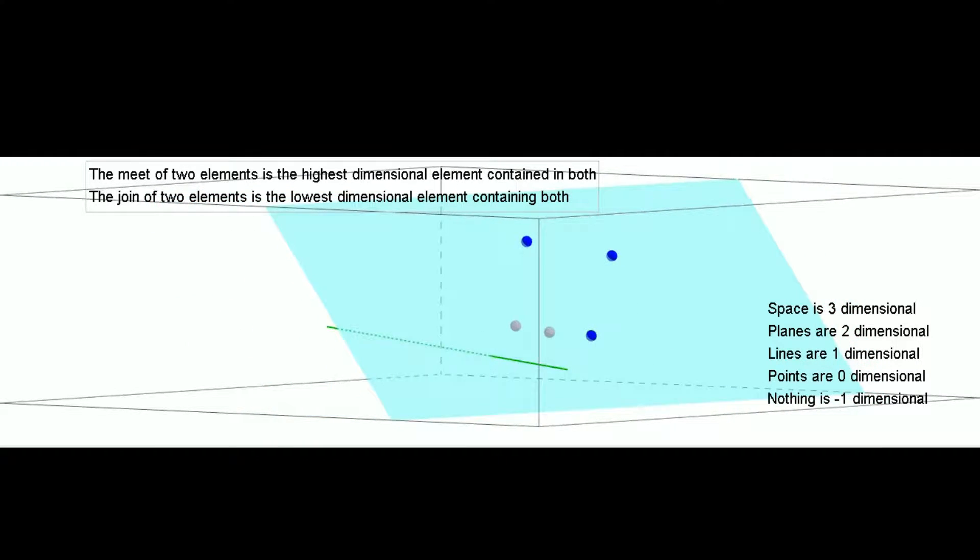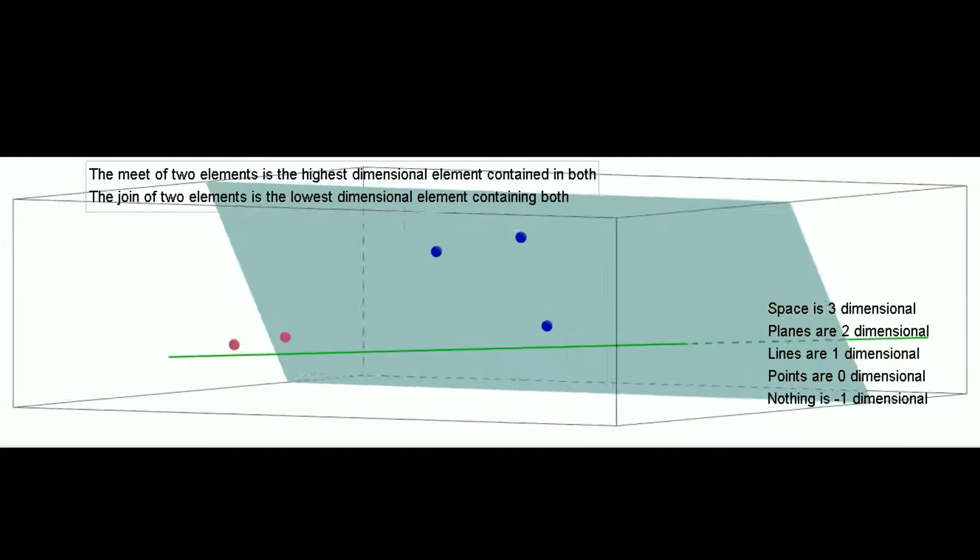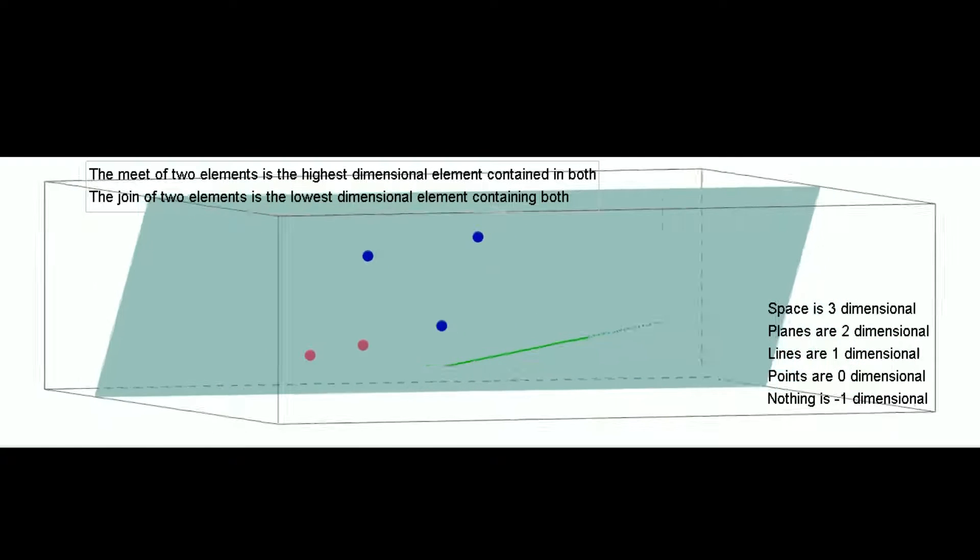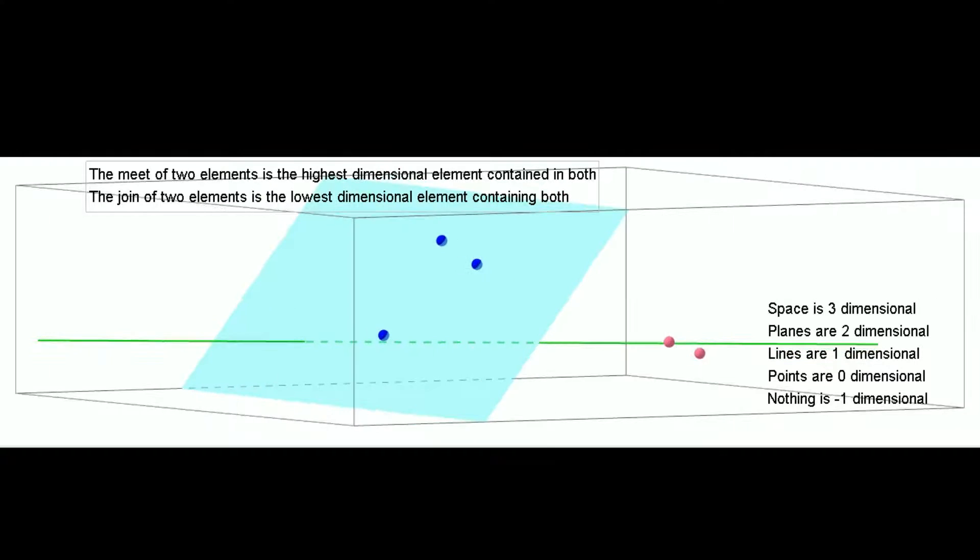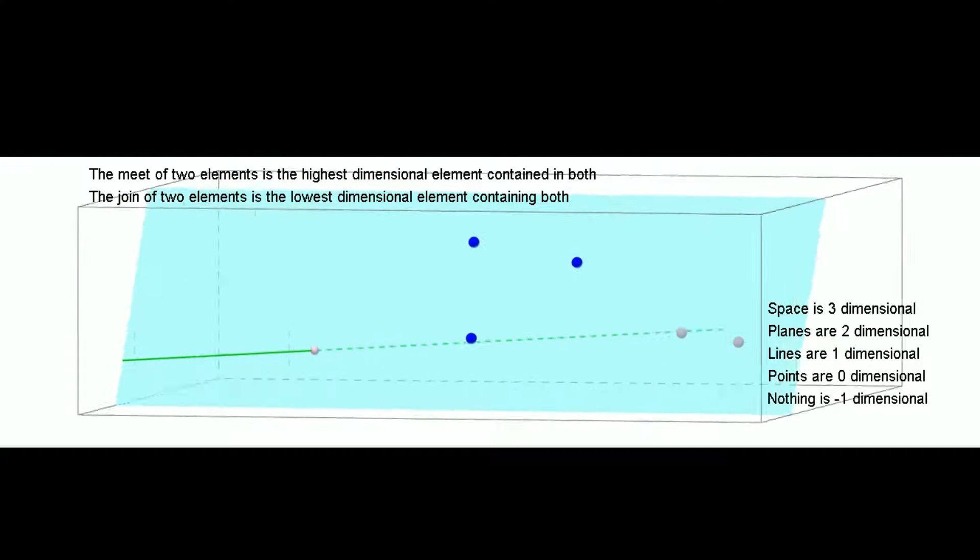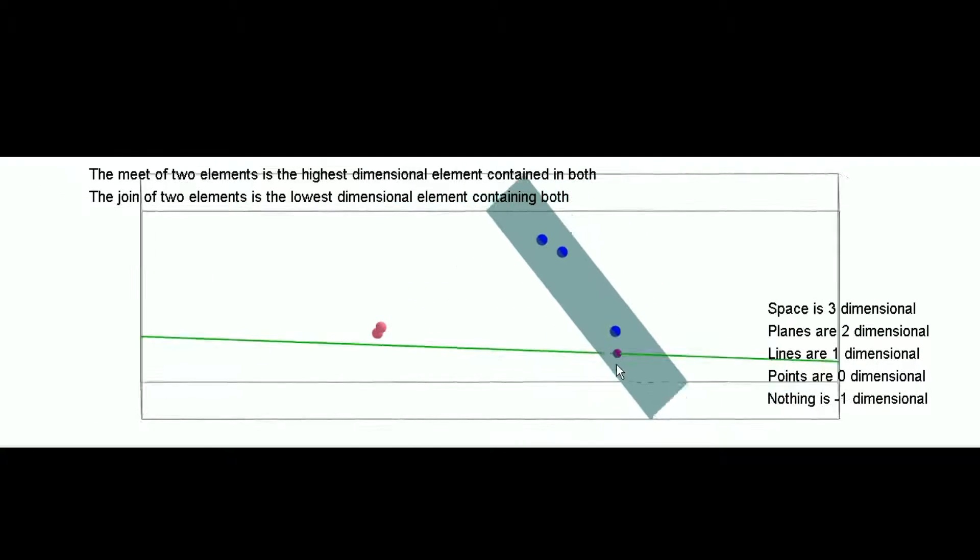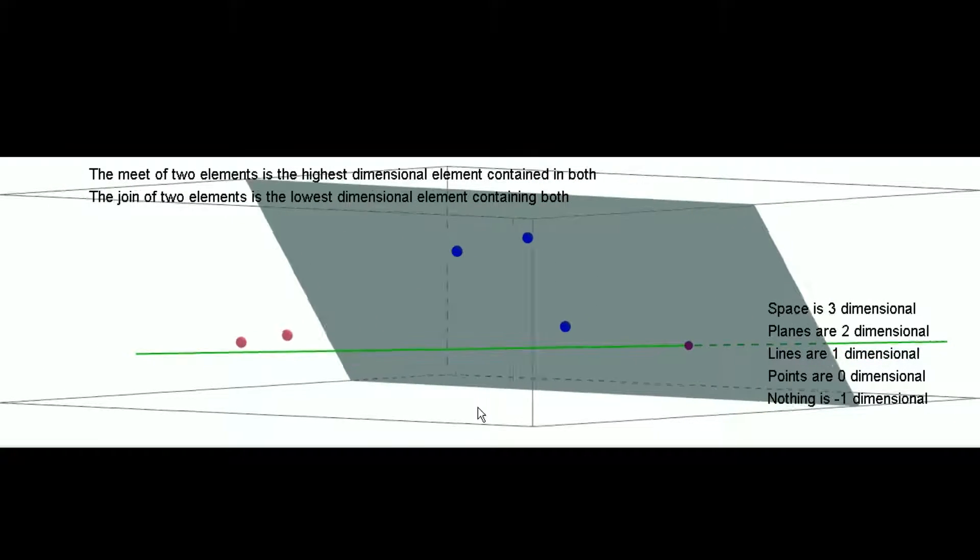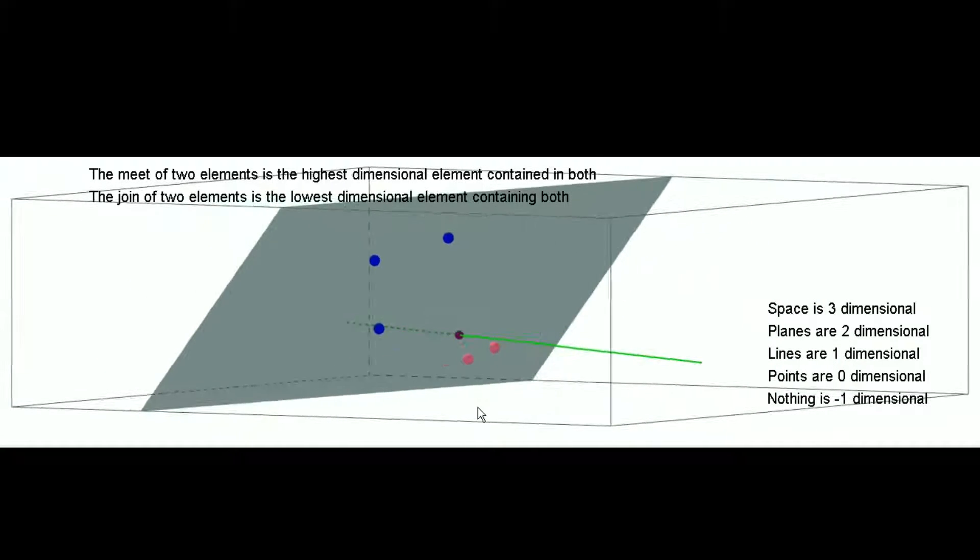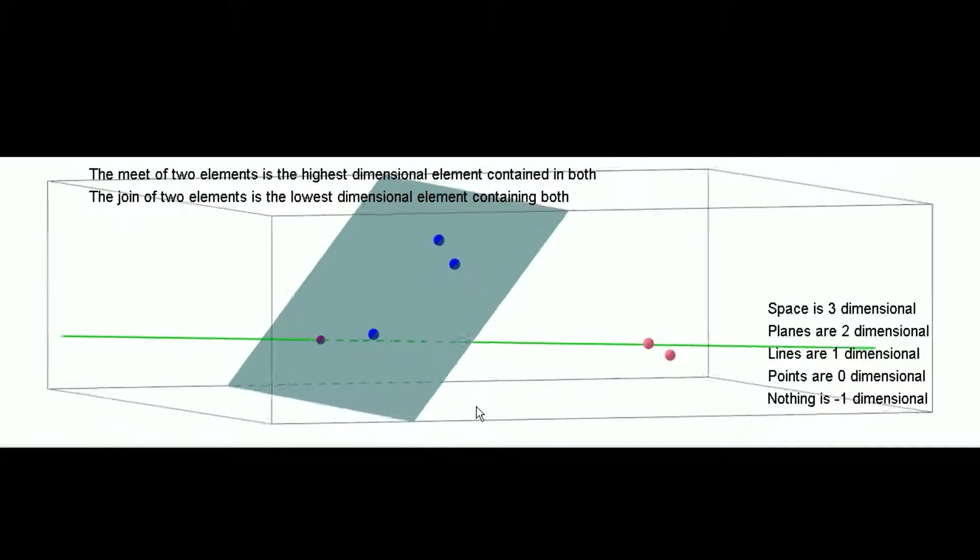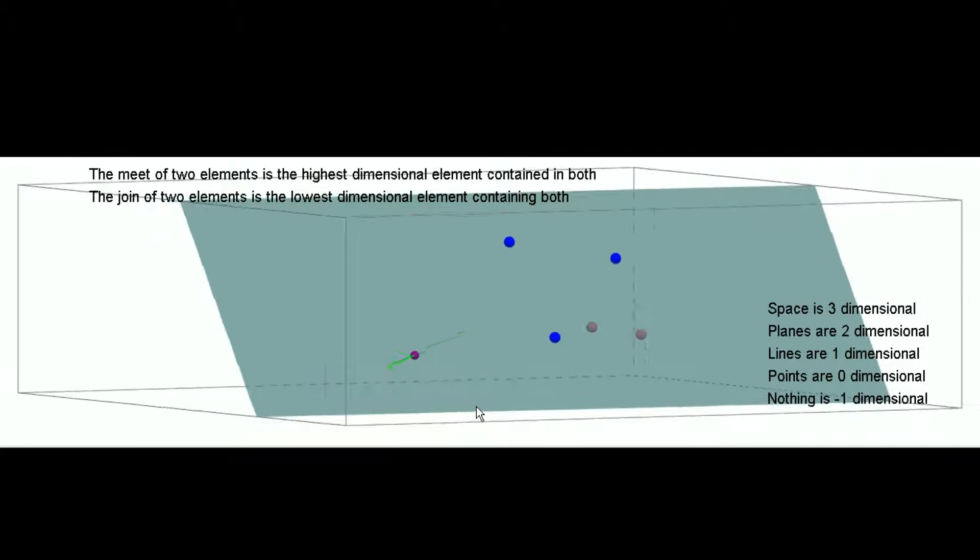So, for example, the meet of this green line and this blue plane here is going to be this point here, which I've just added, this purple point. That's where these two elements meet. That's their meet. Because this is the highest dimensional object, which is contained within both of them.